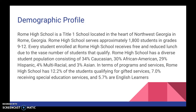Looking over our demographic profile, Rome High School is a Title I school located in the heart of Northwest Georgia in Rome, Georgia. Rome High School serves approximately 1,800 students in grades 9–12. Every student enrolled receives free and reduced lunch due to the vast number of students that qualify. Rome High School also has a diverse student population consisting of 34% Caucasian, 30% African American, 29% Hispanic, 4% multi-racial, and 3% Asian.